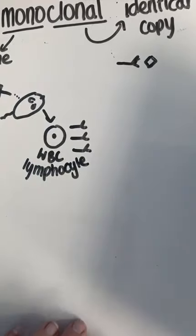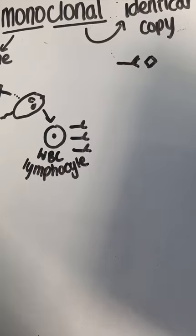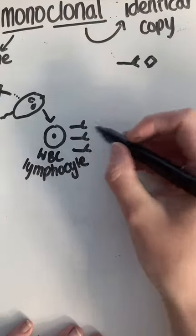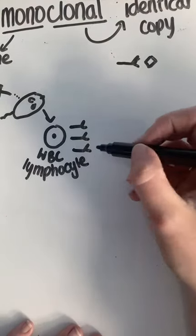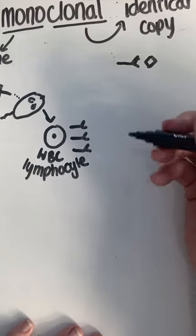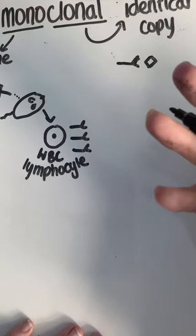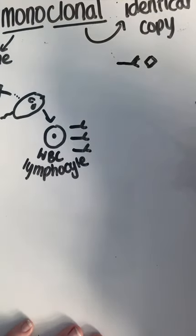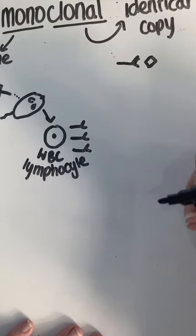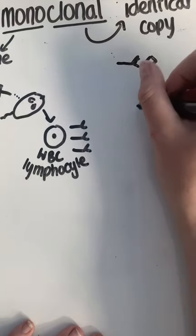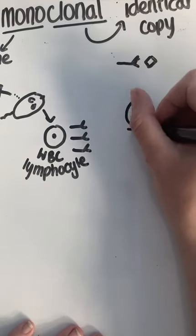We then need to make lots of these antibodies, but the white blood cell only produces a few. To solve this, we fuse it with a different type of cell — one that divides very fast — and that would be a tumor cell.